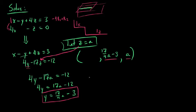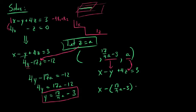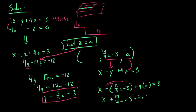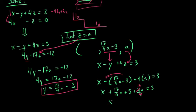Now we're going to take y and z and plug them back into our first equation, which says x minus y plus four z equals three. Substituting, we get x minus (seventeen fourths a minus three) plus four times a equals three. Distributing the negative: x plus seventeen fourths a plus three plus four a equals three. Four a whole equals sixteen fourths a, and sixteen plus seventeen gives thirty-three. So we have x plus thirty-three fourths a plus three equals three. Subtracting three from both sides, x equals negative thirty-three fourths a.